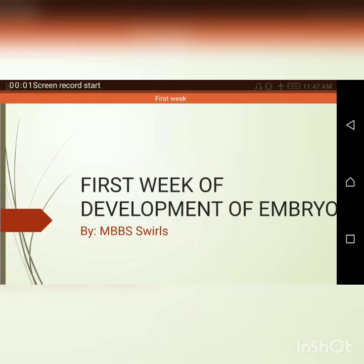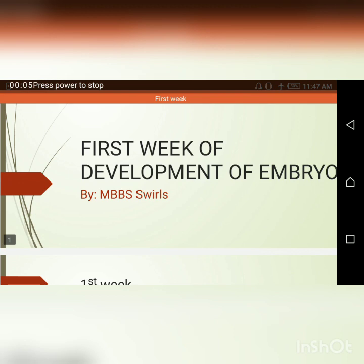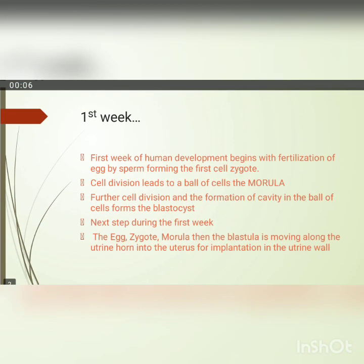Today our topic is the first week of development of the human embryo. The first week starts with fertilization of the egg by sperm, forming the first cell — the zygote.